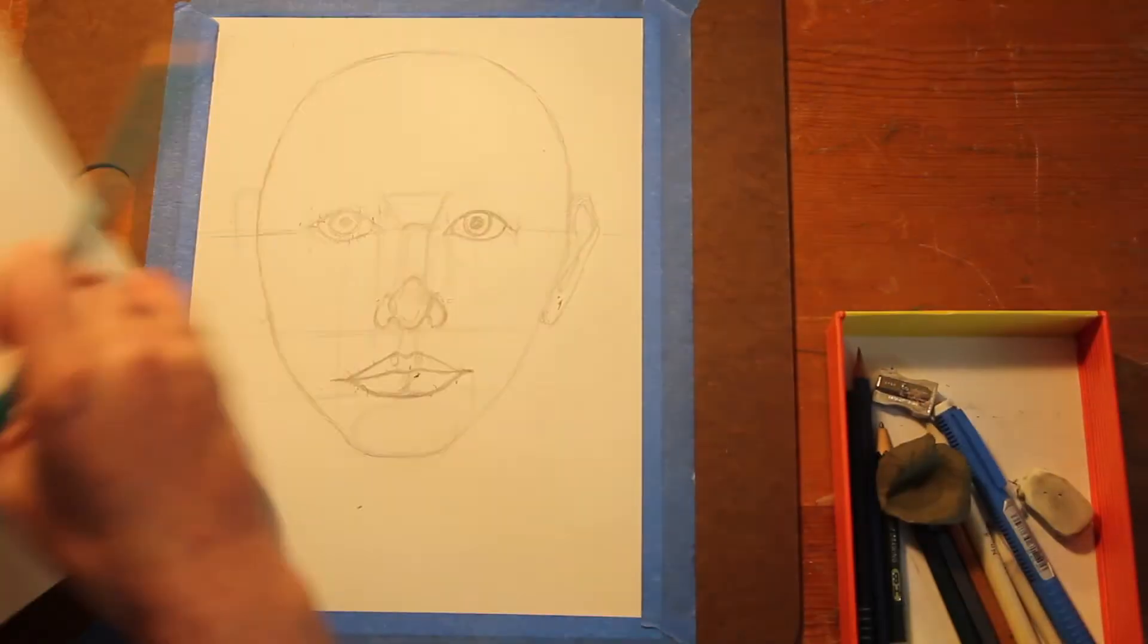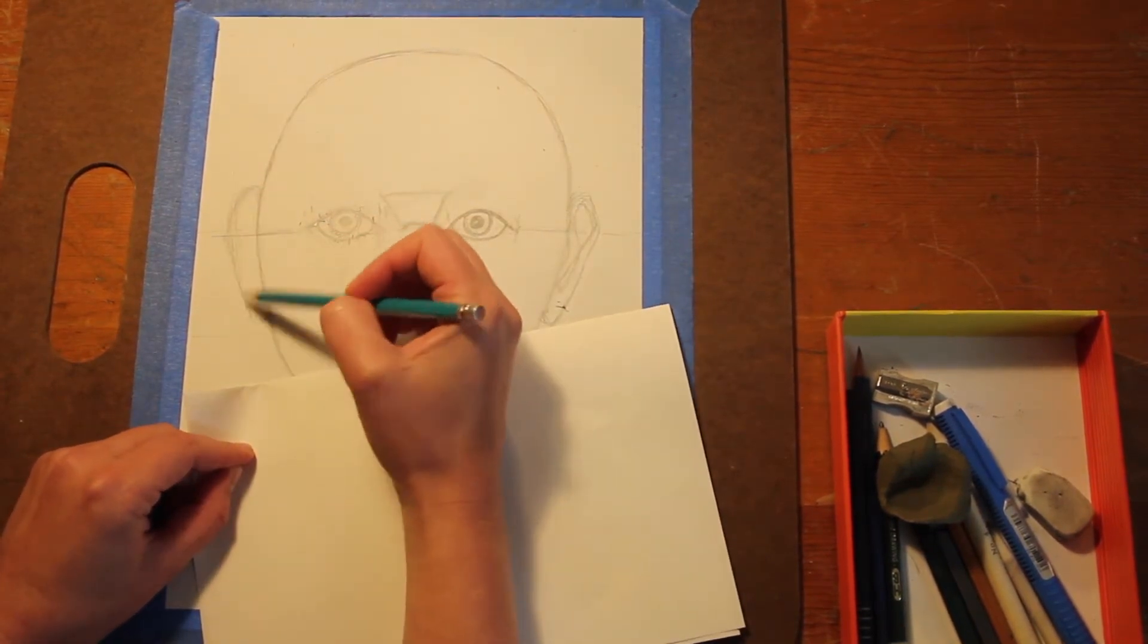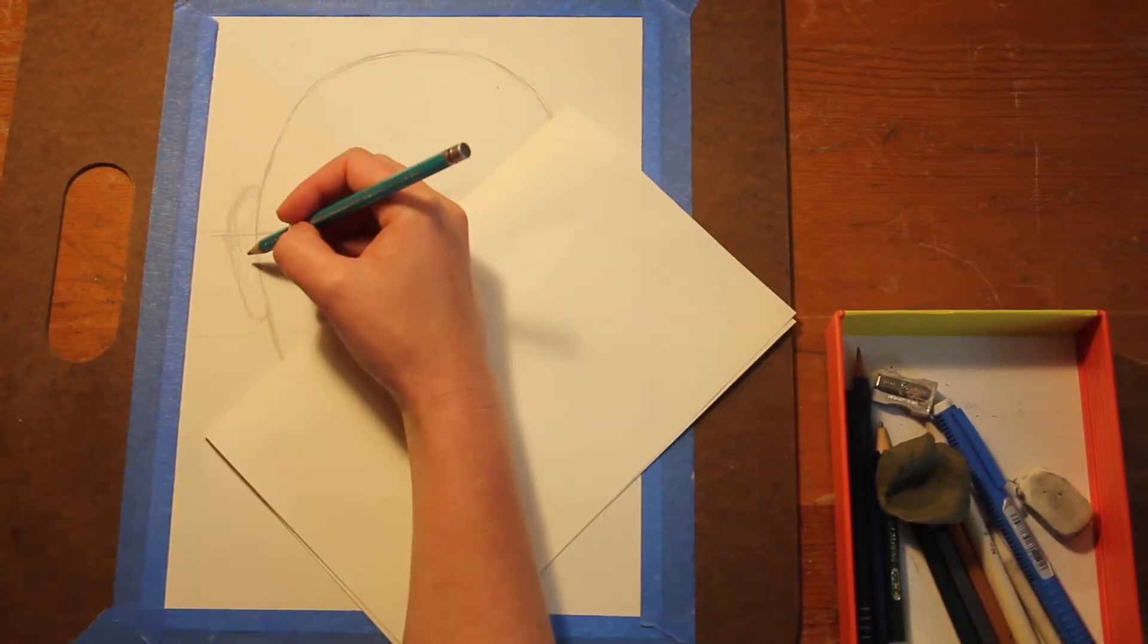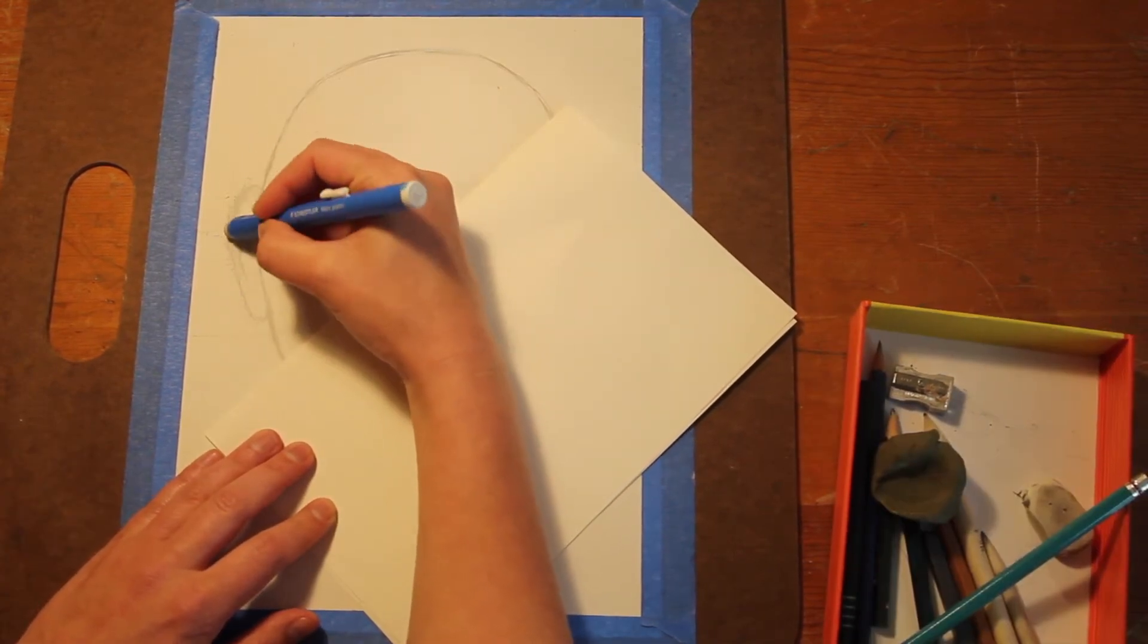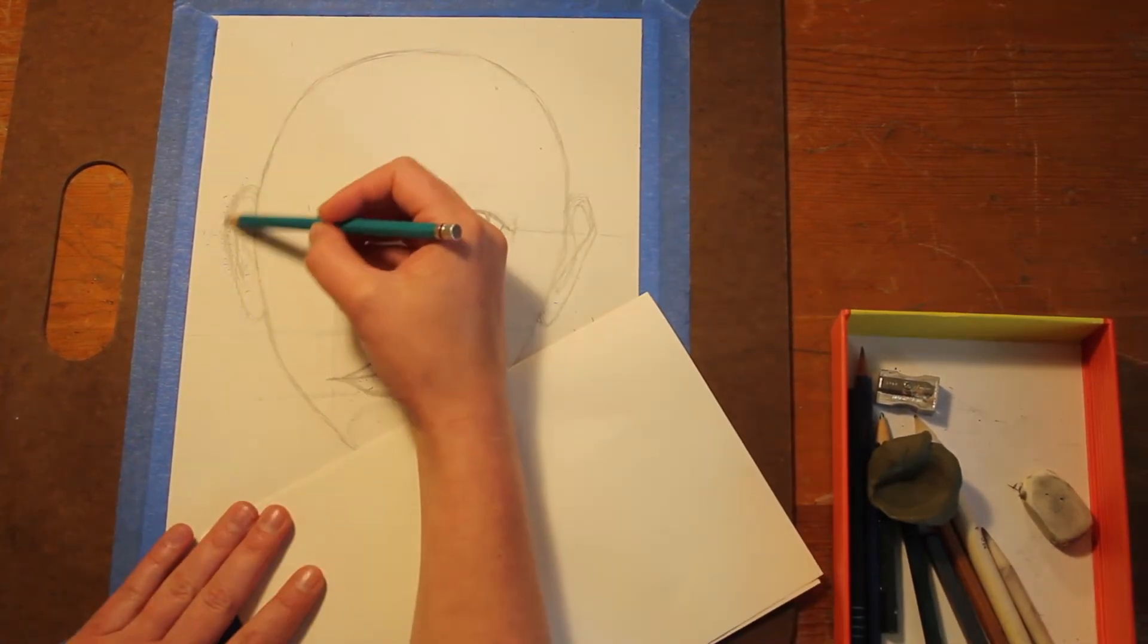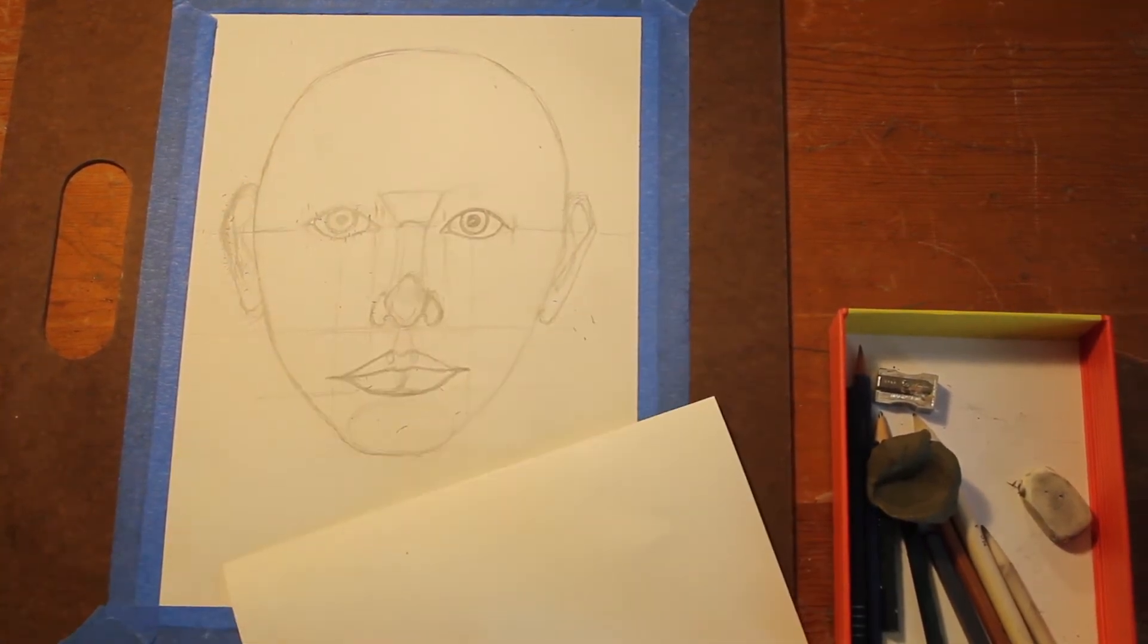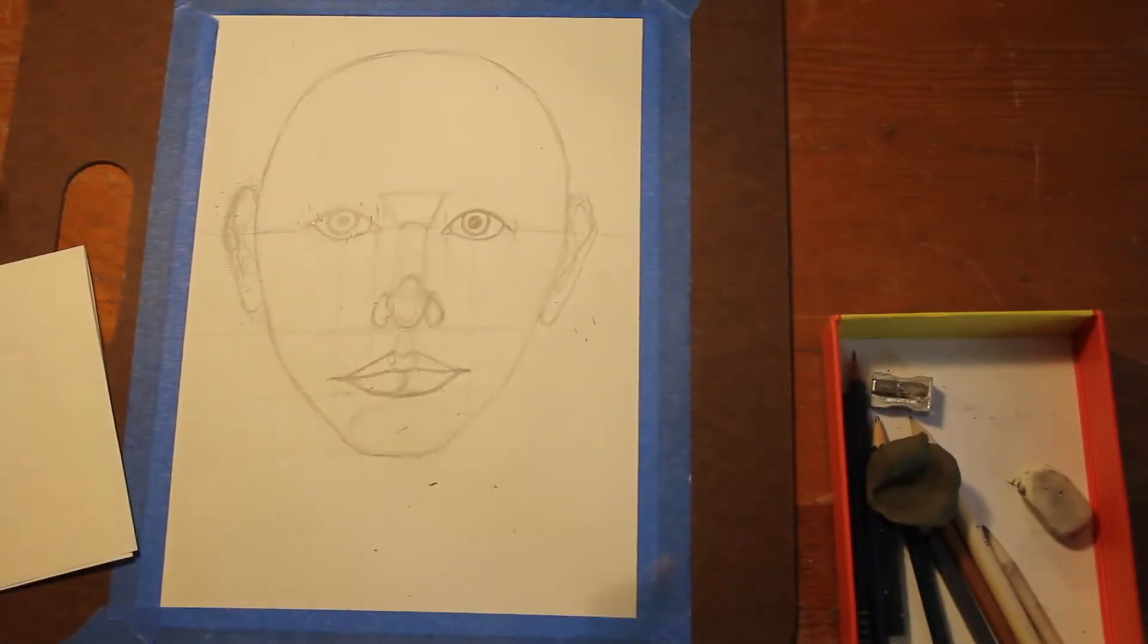Sometimes it's helpful to just gesture the ears in quickly and loosely and then go back and kind of tidy up details. They are pretty much symmetrical, but you can kind of observe them both independently. Again, this part with those guidelines that I gave you is still really up to observation because everyone's ears do look different just like all of the features on your face. Okay, so the next thing that we're going to draw is your neck.